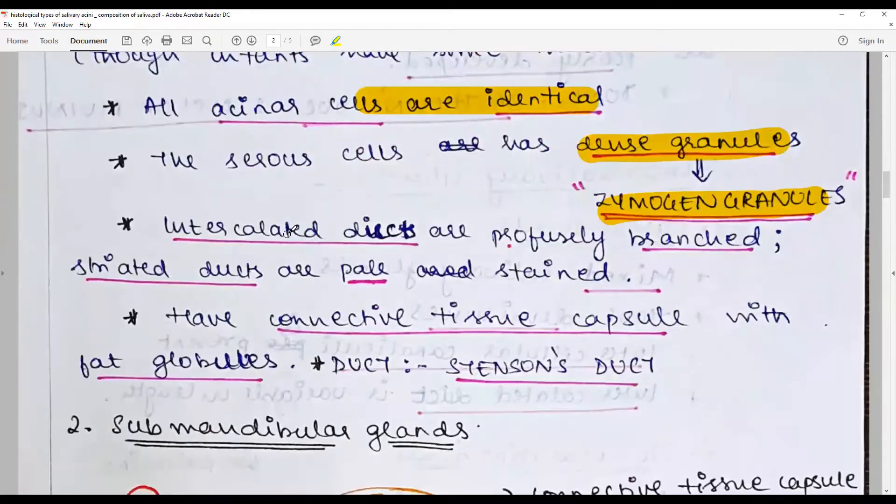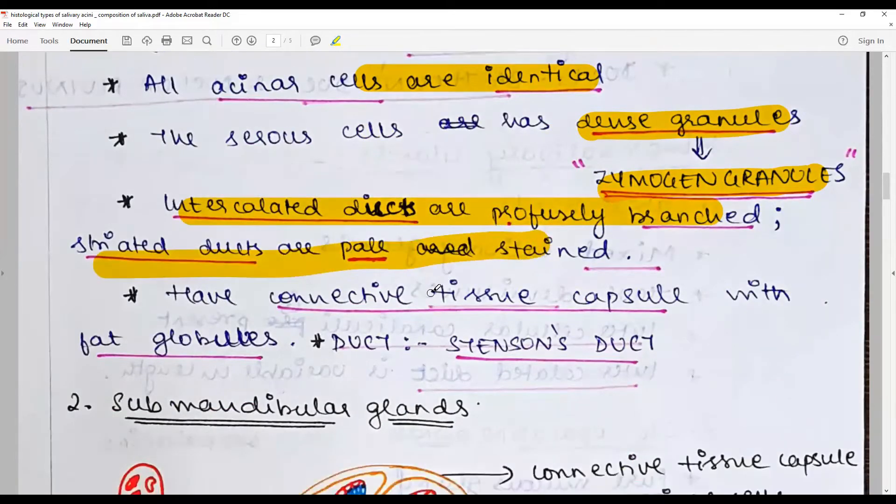They have intercalated ducts that are profusely branched, striated ducts that are pale and stained, they have a connective tissue capsule with fat globules, and the duct is Stenson's duct.